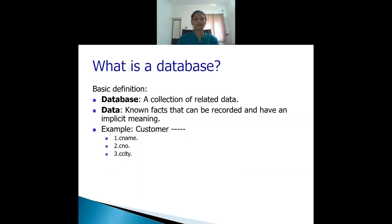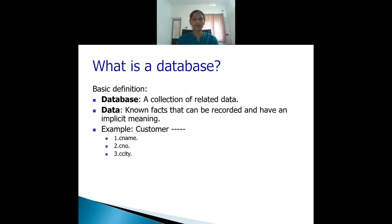Now, what is a database? We can define a database as a collection of related data. For example, if I take the first student of this class, roll number one, and store his name, register number, and marks for the first semester — that is data. Similarly for roll number two and roll number three. All these are related data, and if I store all this related data together, we can call it a database — for example, the database of S3CT students.